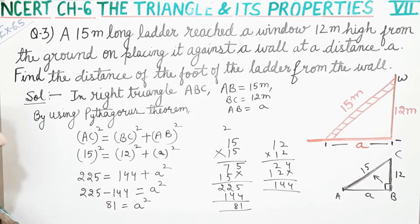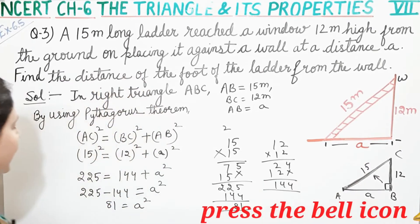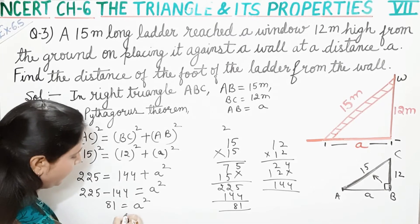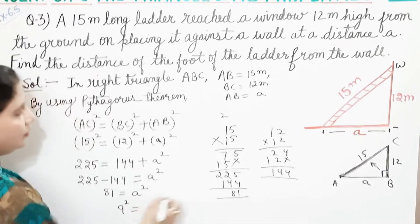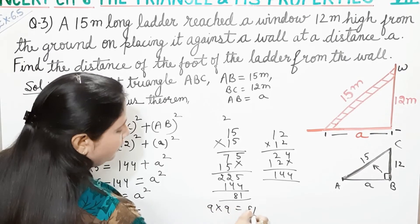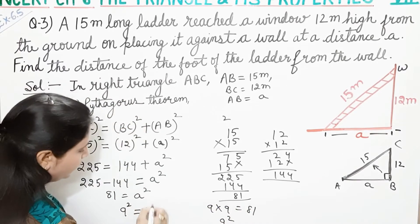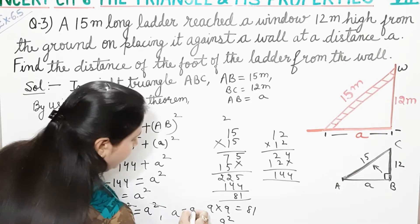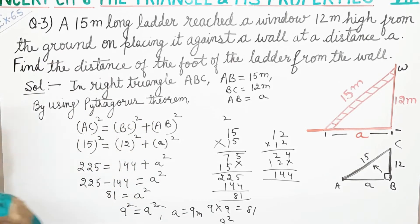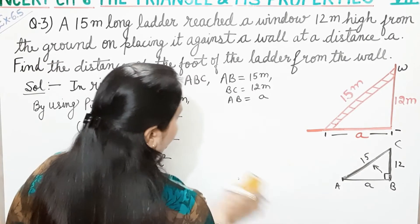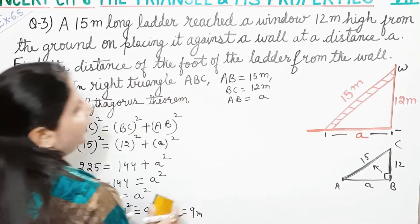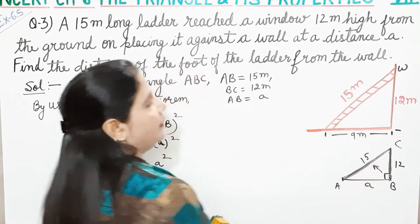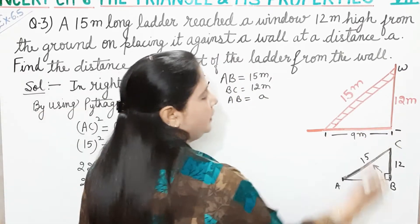Yeh A ka square aaya hai, lekin humein A ka square nahi chahiye na — humein toh A chahiye. Toh hum kya karenge: 81 ko bhi square ki form mein likhenge. Toh hum likh sakte hain isko 9 ka square, kyunki 9 into 9 = 81. Toh 9 ka square aur A ka square — square se square cancel. Toh A kitna aa gaya hamare paas? A aa gaya 9 meter. Hamein wahi chahiye tha. Toh ladder ka jo foot hai aur wall se distance — that is 9 meter.